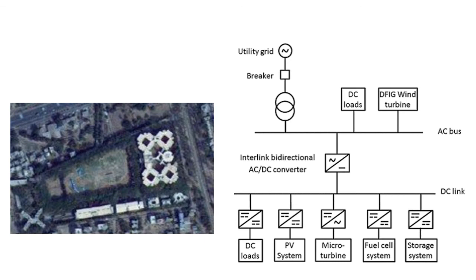The hybrid microgrid architecture has two buses: an AC bus and a DC bus. The DC bus is connected with fuel cell, PV system, DC loads, and storage. The AC bus is connected with the utility grid via a breaker and step-down transformer, and includes a doubly-fed induction wind turbine. Both buses are connected by an interlinked bi-directional AC-to-DC converter. The sizing of different resources is very crucial and we have already started working on it.